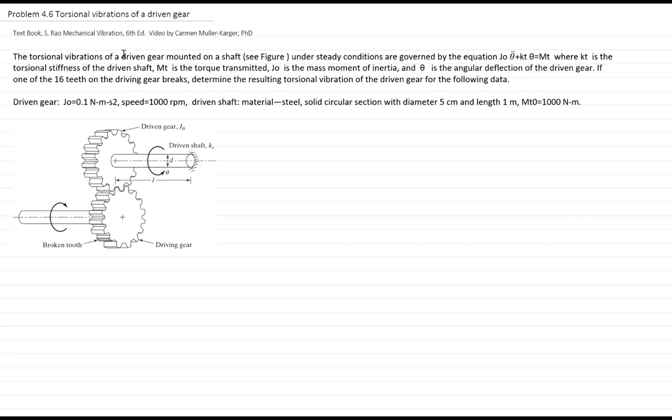The torsional vibration of a driven gear mounted on a shaft, which is this gear and this shaft, under steady state condition is governed by the equation j₀, which is the mass moment of inertia, times the angular acceleration plus k torsional,